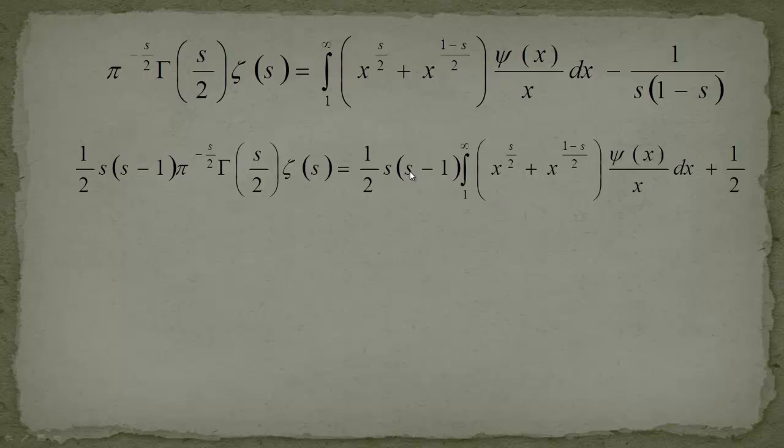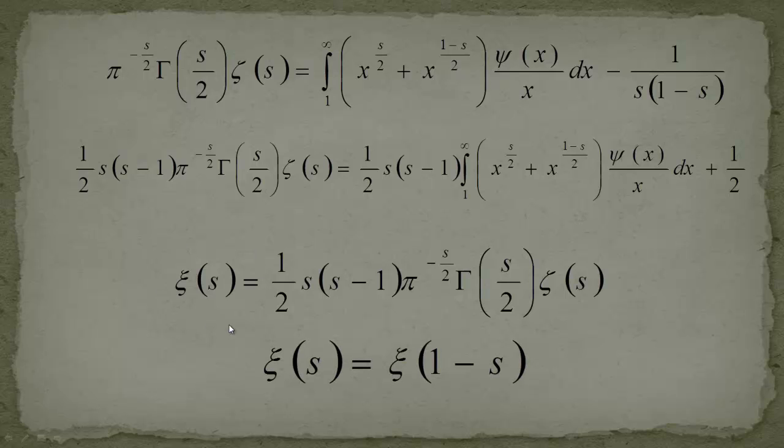And 1/2 s(s minus 1) is left in here. Now what Riemann said was okay if I look at this equation I will define this very strange looking guy, which is 1/2 s(s minus 1) π^(-s/2) γ(s/2) ζ(s). He defined this as the xi function.